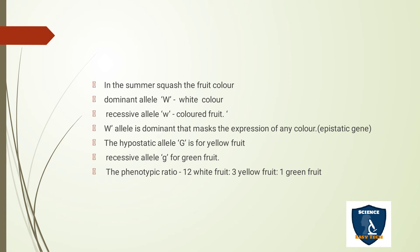The example given is summer squash fruit color. The dominant gene capital W gives white color and the recessive gene small w gives colored fruit. Capital W is epistatic and dominant — when present, it suppresses the phenotypic characters of the other gene. The hypostatic gene capital G gives yellow fruit, and the recessive allele small g gives green fruit. The phenotypic ratio is 12 white : 3 yellow : 1 green.